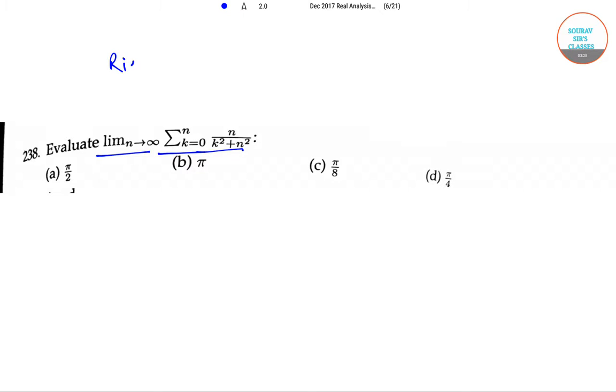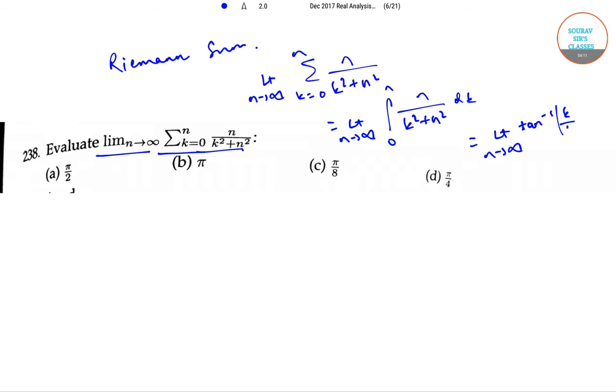Consider it to be a Riemann sum, which is evaluated in the following manner. Limit n tending to infinity, summation n by k squared plus n squared, k equals 0 to n, equals limit n tending to infinity integral from 0 to n of n by k squared plus n squared dk, which equals limit n tending to infinity tan inverse k by n from 0 to n. That is equal to pi by 4. So option d is the correct answer.